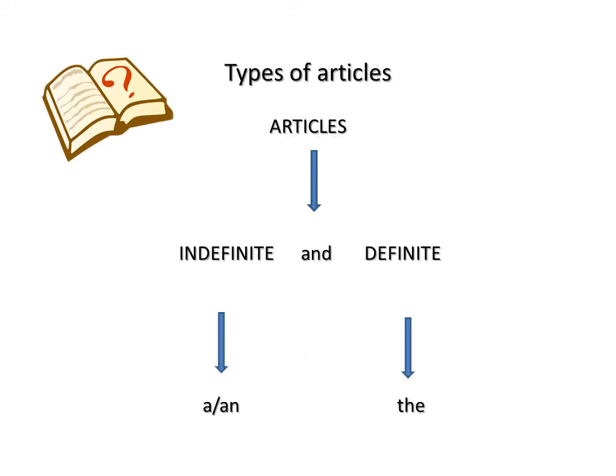There are two different types of articles: indefinite and definite article. Indefinite articles are the words 'a' and 'an'. Definite article is the word 'the'. The correct use of articles is quite difficult. There are rules, but there are many exceptions to those rules. Fortunately, making a mistake when using articles doesn't usually stop us communicating.